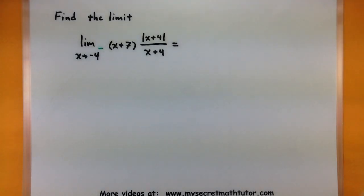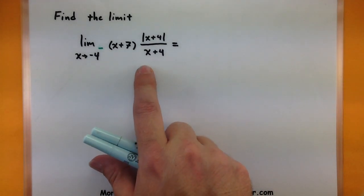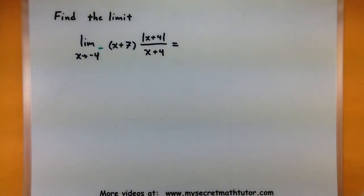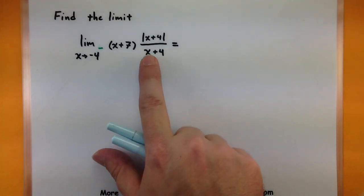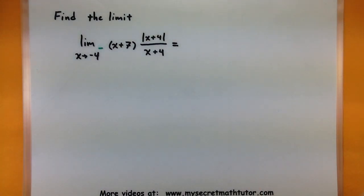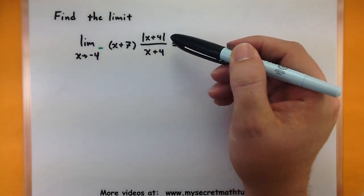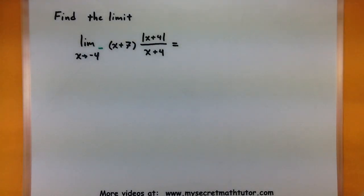This one we're looking at the value as x approaches negative 4 from the left, and we're looking at this very interesting looking function. It's x plus 7 multiplied by the absolute value of x plus 4 all over x plus 4. Again, it's good to look at these and see if there's any problem areas. This one has a big problem area with the denominator of this fraction. If I tried to substitute in a negative 4 directly, I'd get a 0 on the bottom, and I can't divide by 0. Well, it's really tempting to try and cancel these out, but unfortunately we can't do that, because they're not exactly the same. The top involves an absolute value, but the bottom does not.